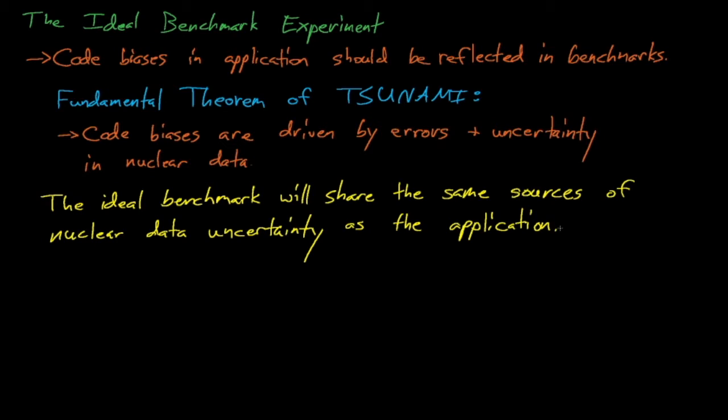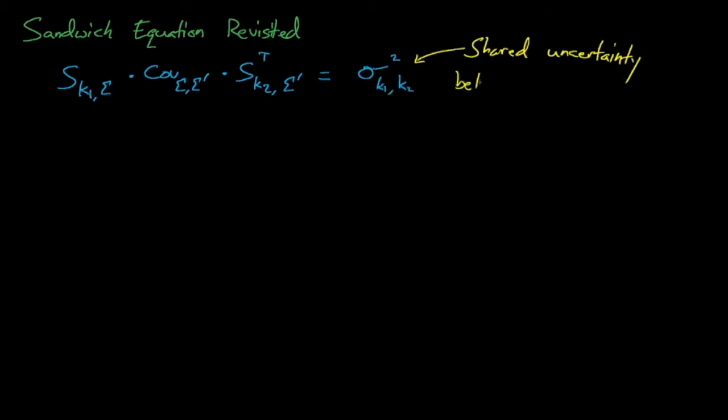So how can we identify how much nuclear data-induced uncertainty is shared between some benchmark and some application? If we know the sensitivity coefficients for one system, whose eigenvalue is k1, and we put it into the sandwich equation with the sensitivity coefficients for the other system, k2, then the sandwich equation will yield the shared uncertainty between k1 and k2.